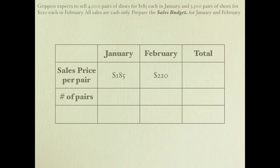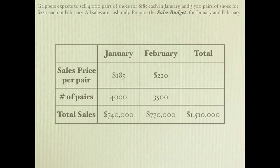Next, multiply the sales price times the number of pairs anticipated each month — 4,000 pairs in January and 3,500 in February — giving total sales of $740,000 in January and $770,000 in February, for a combined total of slightly over $1.5 million. Since all sales were cash, we didn't need to separate cash and credit. If needed, you would multiply the percentages — say 60% cash, 40% credit — times total sales and separate them out.